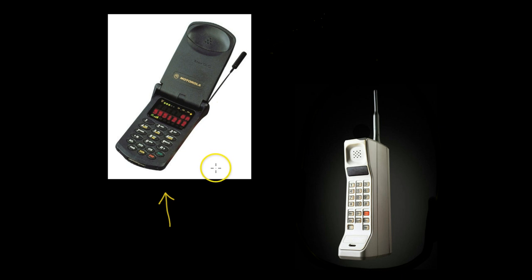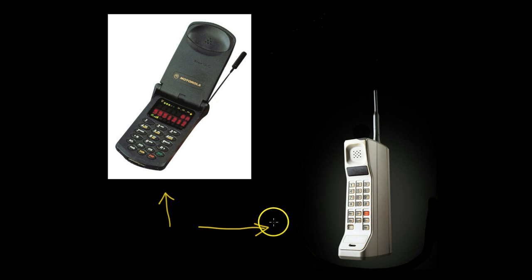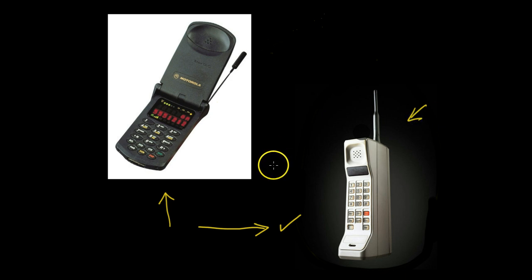But then you find another box with a bunch of junk in it and you find something that looks like that. And so you can kind of make the assumption that the stuff in the box with this thing is going to be much older, maybe 30 years older, because this is what the first cell phone looked like.